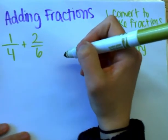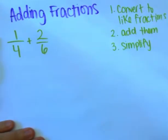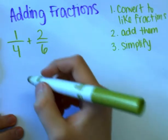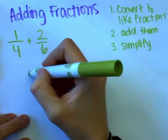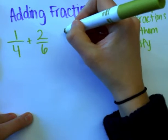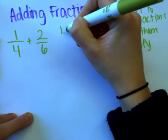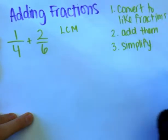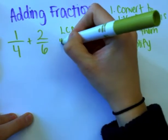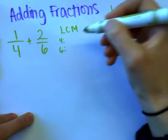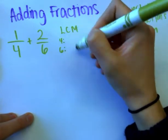I'm looking at fourths and sixths and they are not the same. To figure out a denominator that they can both be converted to, I'm going to find the least common multiple. To do that, I'm going to list out the multiples of four and six to figure out the lowest multiple that they share.